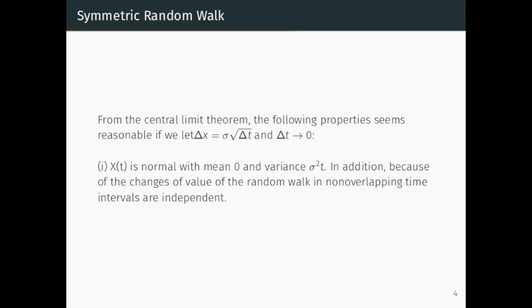From the central limit theorem, the following property seems reasonable if we let delta x equal to sigma times square root of delta t and delta t approaches to 0. The first property is X(t) is normal with mean 0 and variance sigma square t.